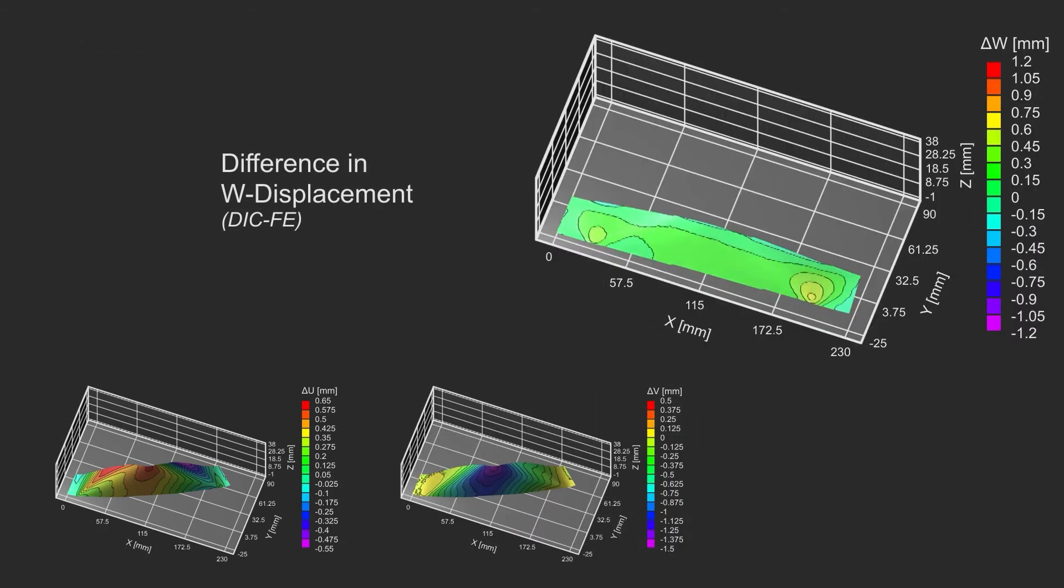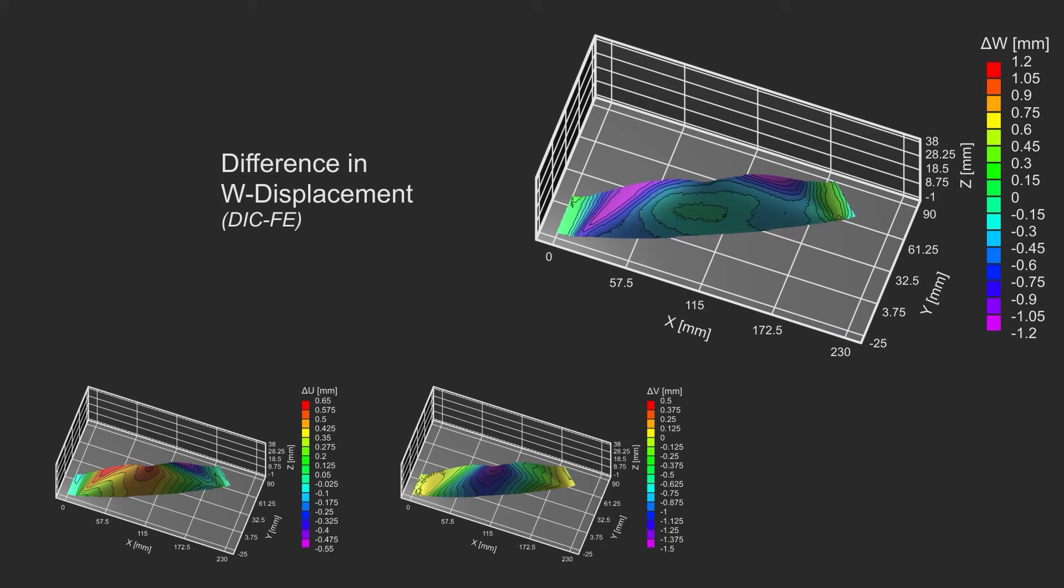The deviations are a fairly small fraction of the overall displacement. But, when we subtract the average rigid body motions, the differences are on the order of 10%, indicating that our simple model does not fully capture the buckling behavior.